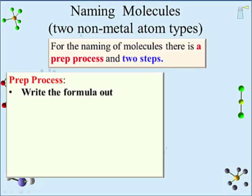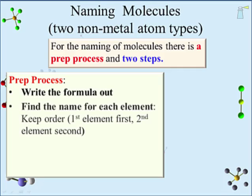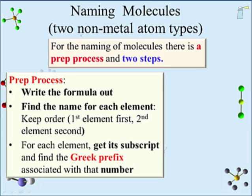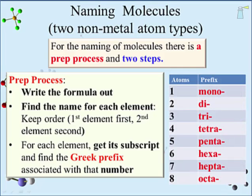Begin by writing the formula out — symbols and subscripts. Find the name for each element and keep the order: first element first, second element second. For each element, get its subscript and find the Greek prefix associated with that number. This is a new concept — all textbooks will include a list of Greek terms for this purpose. What is really going on is that the subscript for an element is being converted into a term that represents that number.